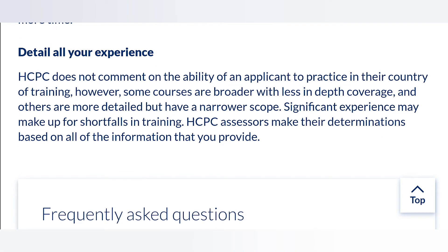Make sure that you detail all of your experience as a professional — whether as a biomedical scientist, occupational therapist, or otherwise — and give the HCPC enough details, because they will not be able to judge your ability based on anything other than what you tell them. The HCPC assessor needs all the details about your experience and education to make the right judgment. If they don't have enough information, they might conclude there is a shortfall in your training or experience. The more details you provide, the easier it is for them to make a decision on your application.